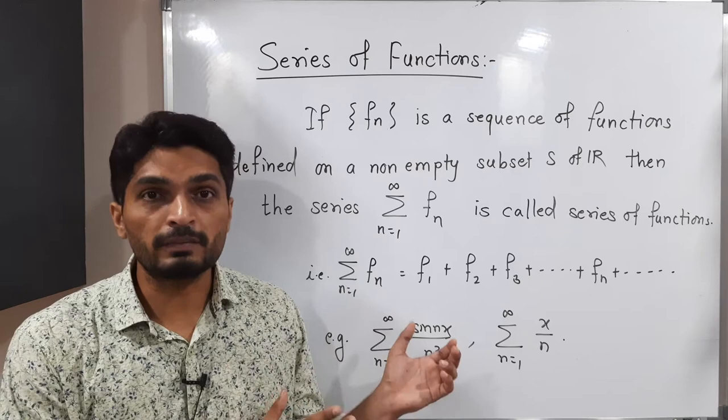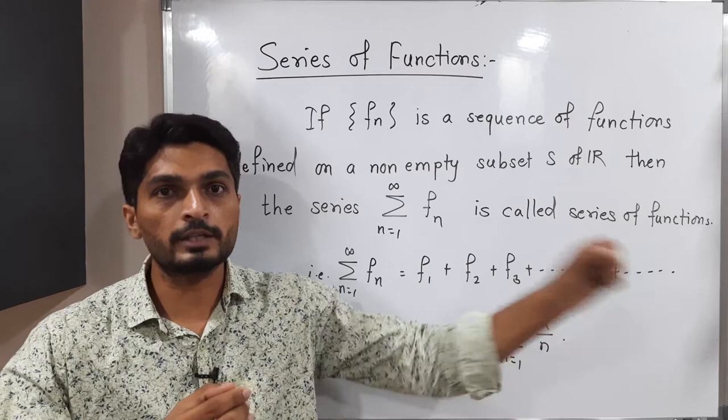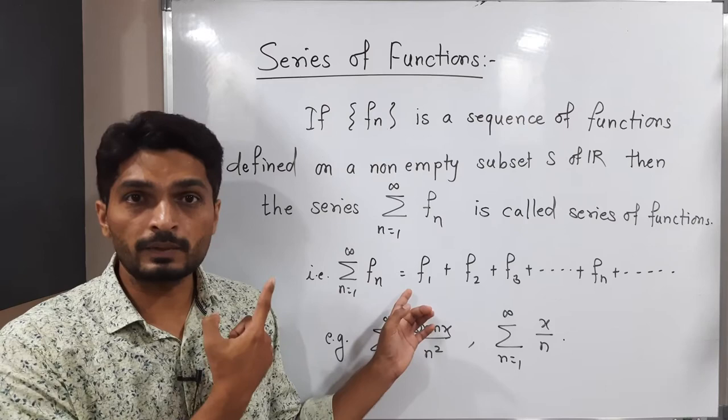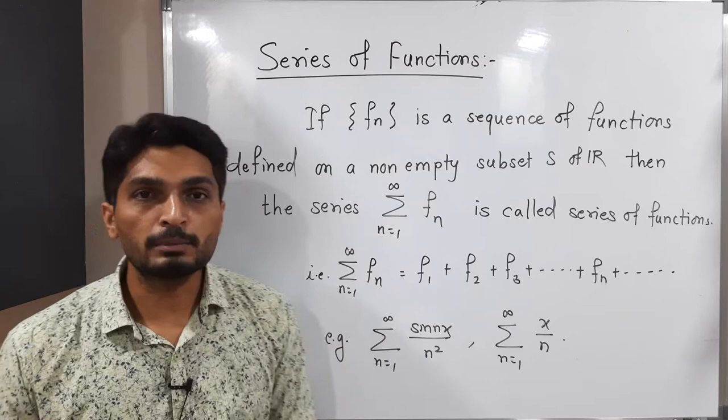If we have a sequence of functions fn — that means f1, f2, f3, and so on — we introduce a series simply by taking the sum of all these functions: f1 + f2 + f3 + ... + fn and so on. We get a series, which we call a series of functions, and we denote it as summation fn, n running from 1 to infinity.